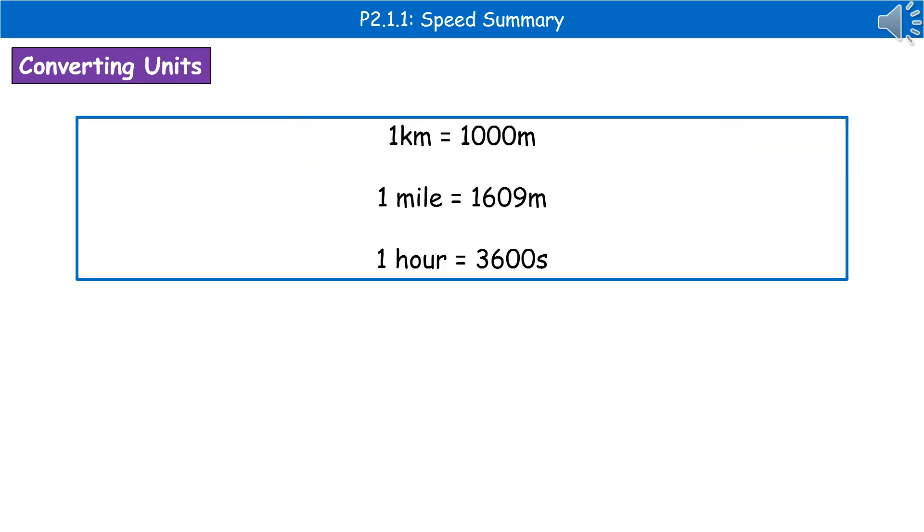Another key aspect you should make sure you are confident in doing is converting between the different units. One kilometer is 1000 meters, one mile is 1609 meters, and one hour is 3600 seconds.